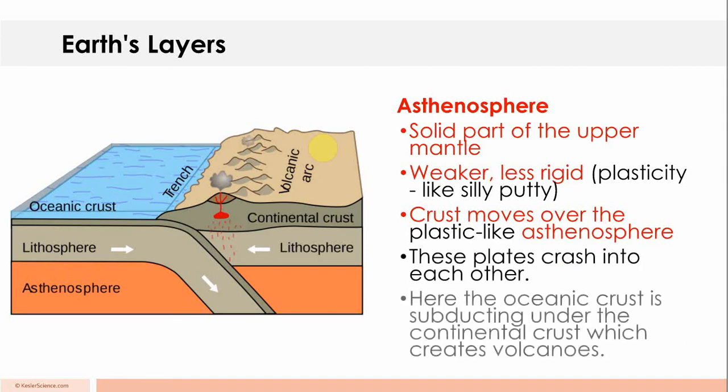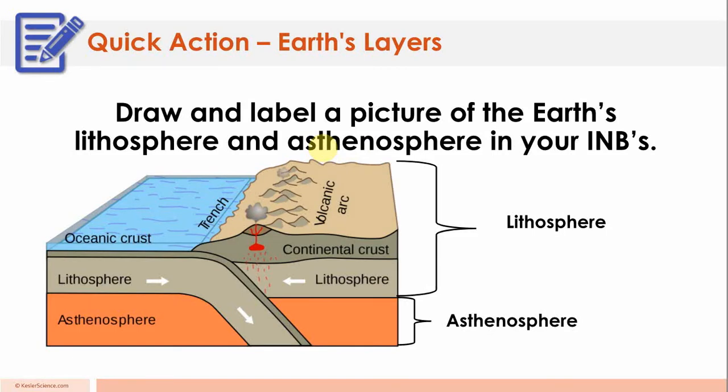Crust moves over the plastic-like asthenosphere. These plates crash into each other. Here, the oceanic crust is subducting under the continental crust, which creates volcanoes. So this is where you had to copy this down. Do your best to remember these parts.